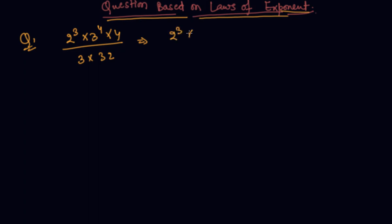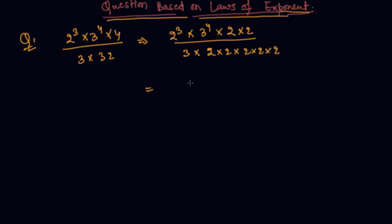Can I write 2 raised to power 3 as it is, 3 raised to power 4, and 4 as 2 into 2? In the denominator, can I write 32 as 2 multiplied by 2 multiplied by 2 multiplied by 2 — that is, using the least common factor? Now I am using the law: a raised to power m into a raised to power n equals a raised to power m plus n. So this is 2 raised to power 2, and 3 plus 2 is 5, into 3 raised to power 4.